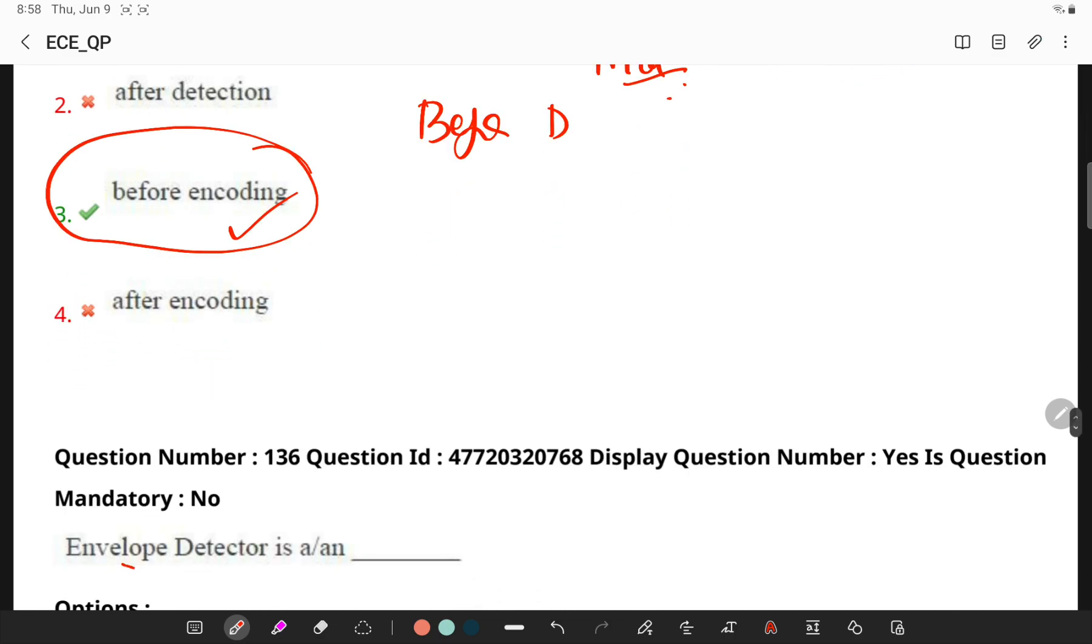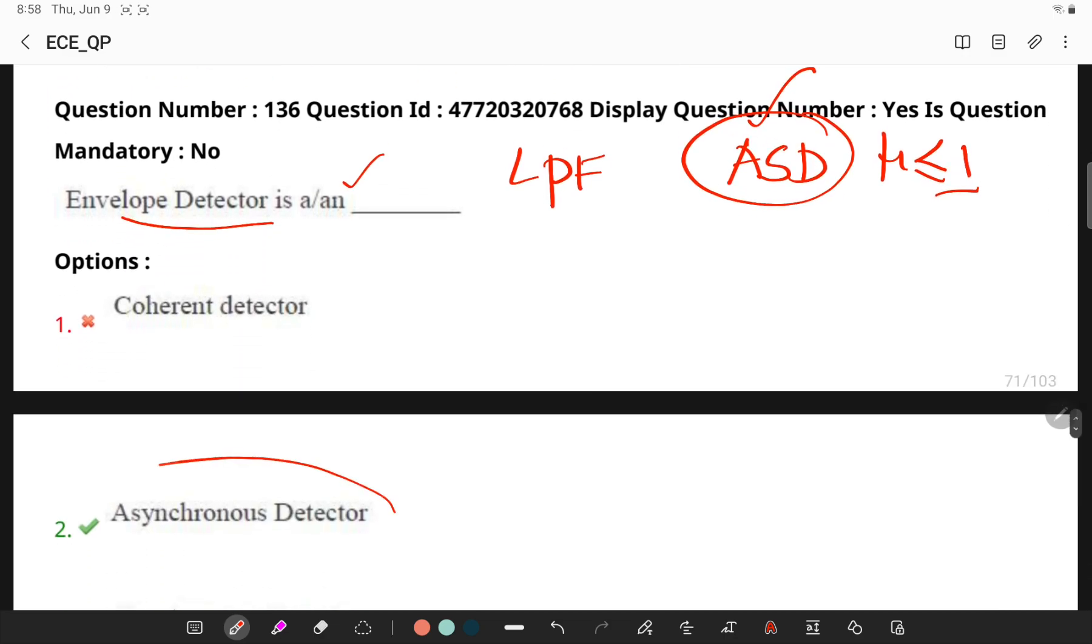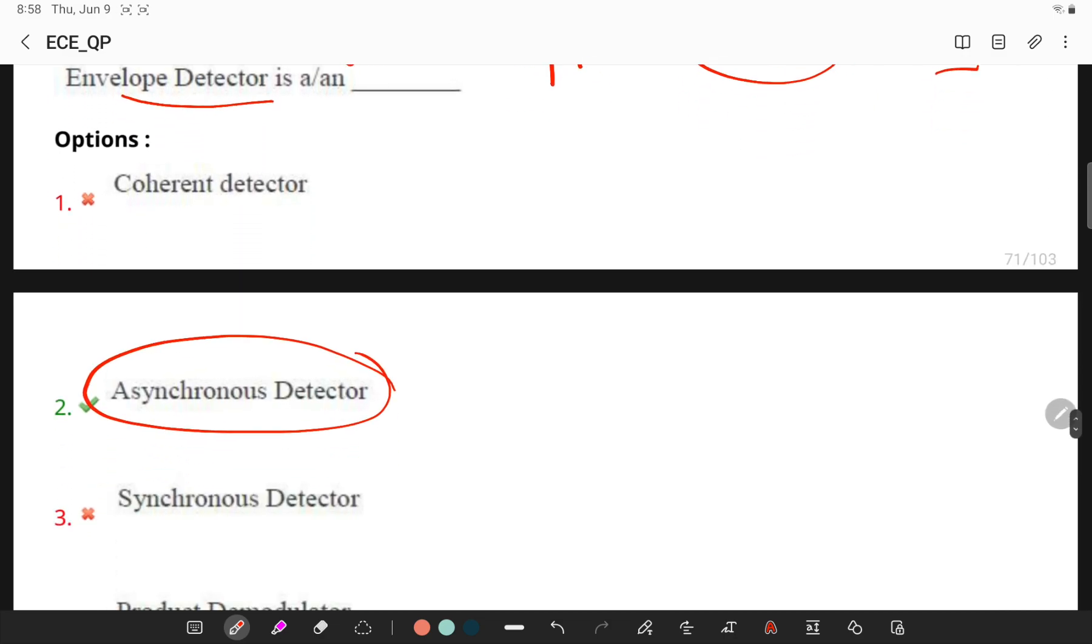So envelope detector is an AM detector which is a low pass filter, and it is also an asynchronous detector which is widely used when the modulation index is less than one. So envelope detector is basically an asynchronous detector.